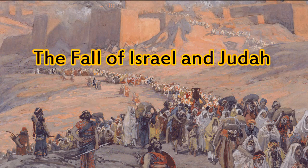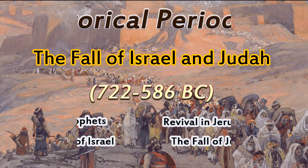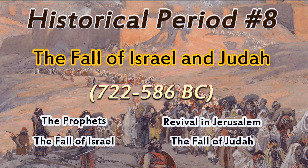Historical period number eight, the destruction of Israel and Judah period, 722 to 586 BC. The main events and people during the period of the fall of Israel and Judah in 2 Kings were number one, the prophets, who appeared during the time of the kings of Israel and Judah. The prophets were mouthpieces of God bringing his message to a rebellious people who had forsaken the Lord. The prophets of the Assyrian period were Jonah, Joel, Amos, Hosea, Isaiah, Micah, Zephaniah, and Nahum. The prophets of the Babylonian period were Jeremiah, Habakkuk, Ezekiel, Obadiah, and Daniel. The last prophets were of the Persian period, and they were Haggai, Zechariah, and Malachi.